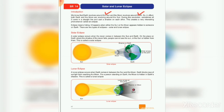This creates a very interesting phenomenon called an eclipse. Sometimes Earth, sun and moon all come in a straight line and cast shadows on each other. You can see in this picture that the moon's shadow is falling on the Earth, and the Earth's shadow is falling on the moon. This interesting phenomenon is called an eclipse.